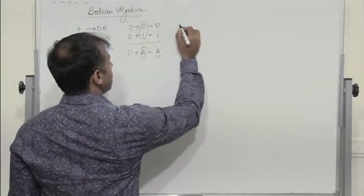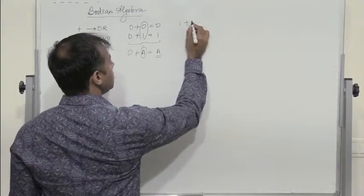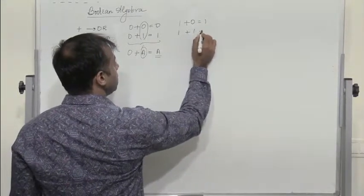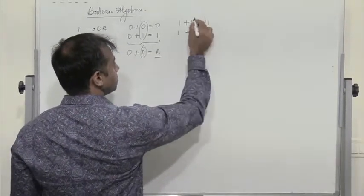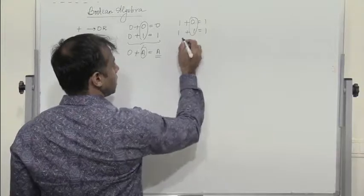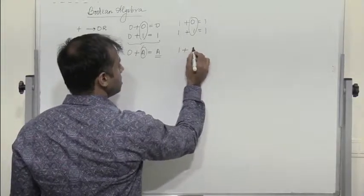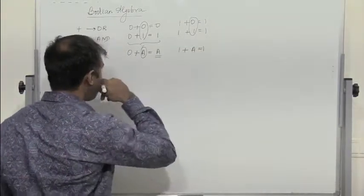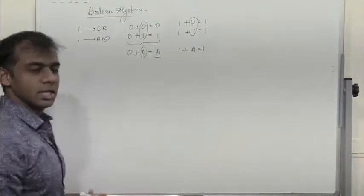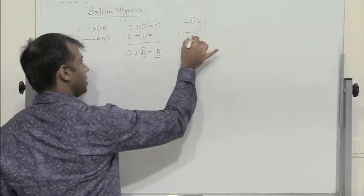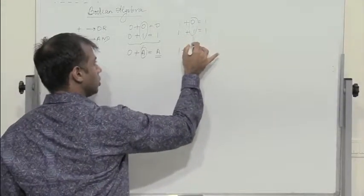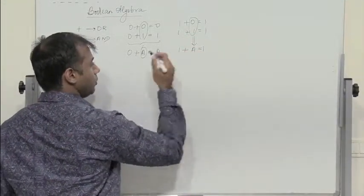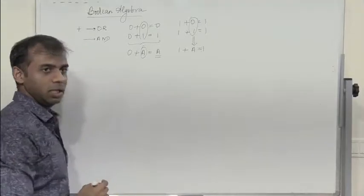Now let's take 1. 1 plus 0 is 1. 1 plus 1 is also 1. So I can say that 1 plus A is 1. Irrespective of A being either 0 or 1, A plus 1 will always give me 1.